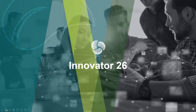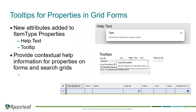The biggest addition to Innovator 26 is tool tips for properties and grid forms — for search grids and item forms. There are two new attributes added to item type properties: help text and tool tips. The goal of these is to provide contextual help for properties on forms and search grids. As we look at our properties, we have these two little question mark icons that appear now. When you add this attribute to a property, such as type or description, it provides a brief description or whatever information you want to include in that text box.